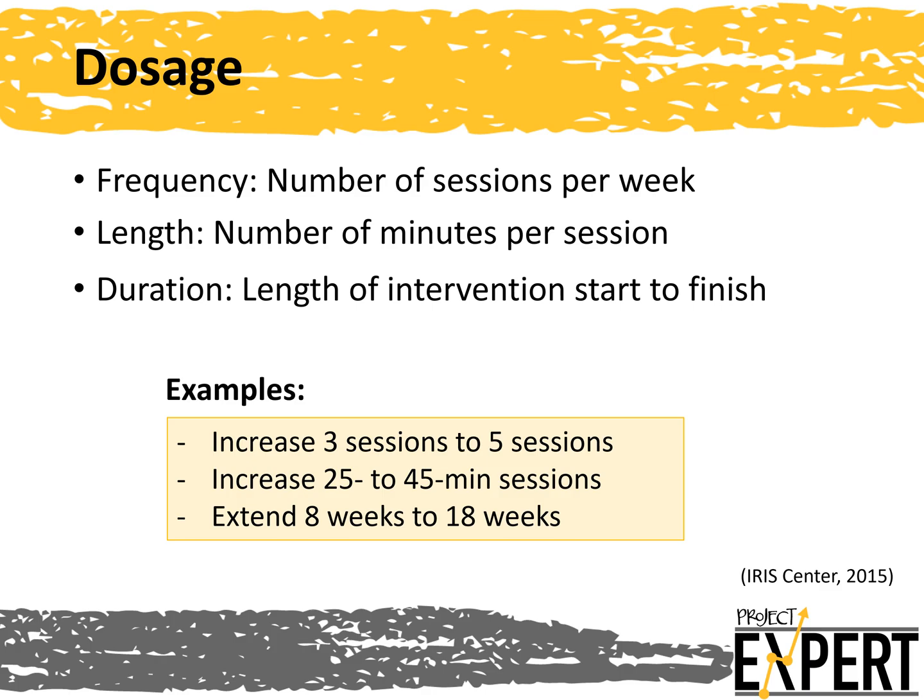One way to adjust intervention instruction is to change the dosage. This includes the frequency — the number of sessions per week — the length — the number of minutes per session — or the duration — the length of interventions from start to finish. Some examples of adjusting the dosage include increasing from 3 sessions to 5 sessions, increasing from 25 to 45-minute sessions, and extending the intervention from 8 weeks to 18 weeks. Sometimes simply spending more time with an intervention can be effective, since students have more opportunities to learn skills and strategies and receive immediate corrective feedback. In this case, the intervention itself does not need to change.